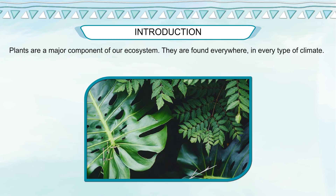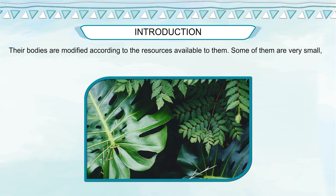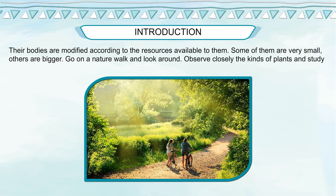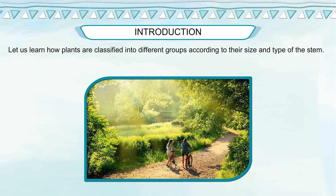Introduction. Plants are a major component of our ecosystem. They are found everywhere, in every type of climate. They adapt to the surroundings where they are found. Their bodies are modified according to the resources available to them. Some of them are very small, others are bigger. Let us learn how plants are classified into different groups according to their size and type of stem.